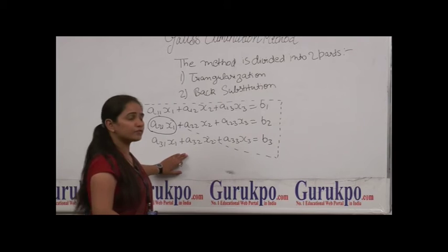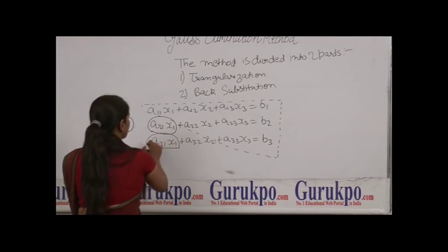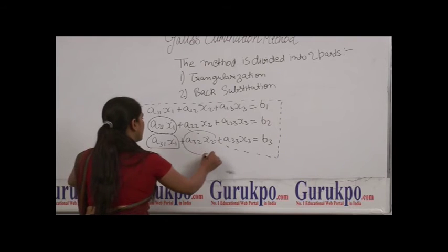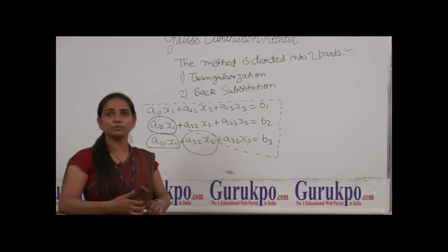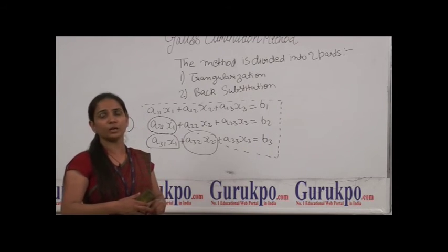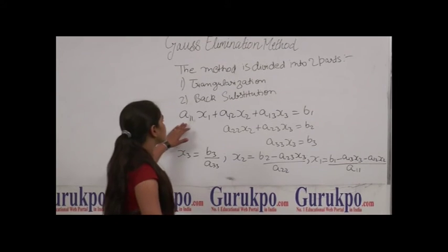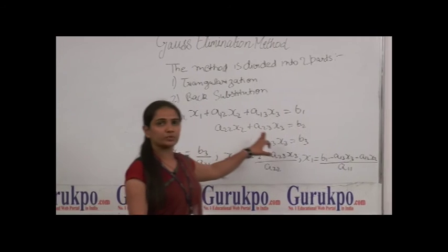And from the third equation, we have to make A31x1 and A32x2 also as 0. When we will do all these variables 0, then we will have the equation of the form. Now we have our system of linear equations in the form of a triangle.